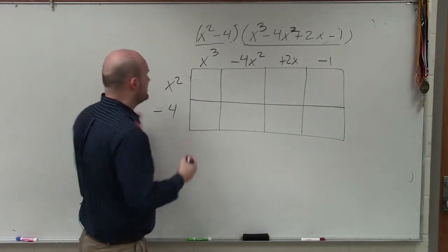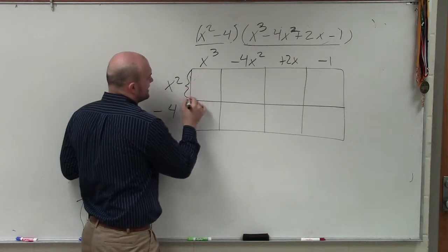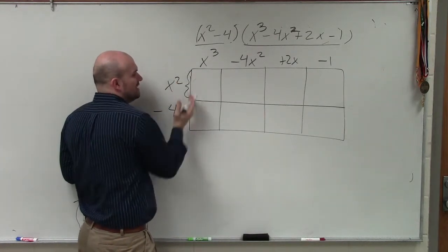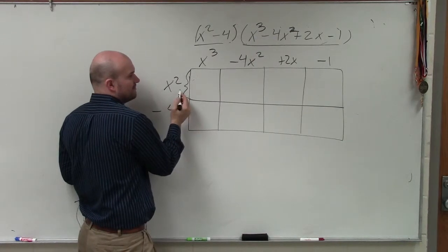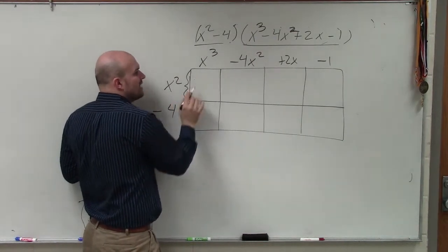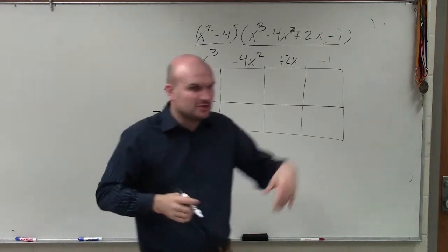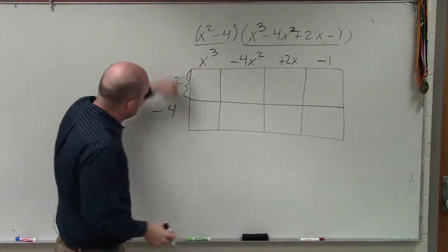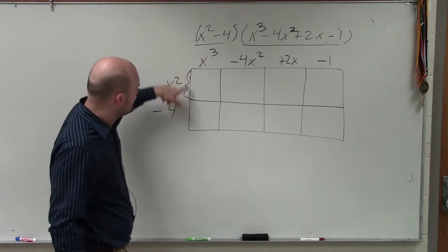Now, when looking at that, what you see is the height of this rectangle is x squared, right? So now, remember, to find the area of a rectangle, you do length times width. So let's just say the length of this rectangle is x squared,